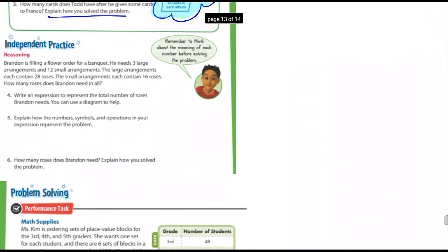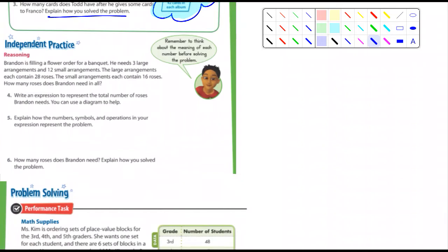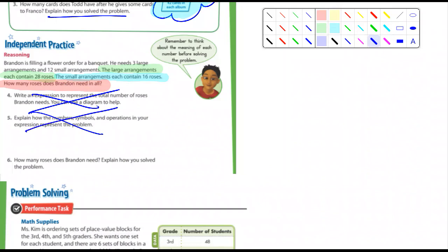Next one down, independent practice. Let's see what that one says. Brandon is filling a flower order for a banquet. He needs three large arrangements and twelve small arrangements. The large arrangements contain 28 roses. That's probably also important. And then the final question is how many roses does Brandon have in all? So I'm not worried about number four, I'm not worried about five. But it's back to the question, how many roses does Brandon have in all? And again, explain how you solve the problem. You should be able to tell me how you did it. Don't just give me an answer, tell me the steps that you took.